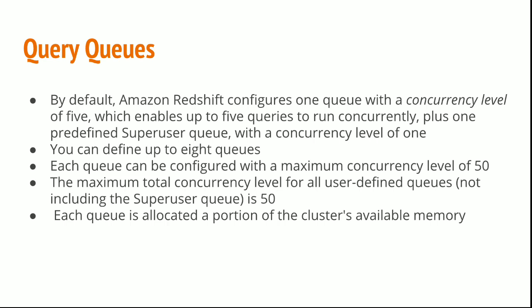You can define up to 8 queues and you can configure up to 50 concurrency levels. The maximum total concurrency level for all user defined queues should not exceed 50. Each queue is allocated a portion of the cluster's available memory.